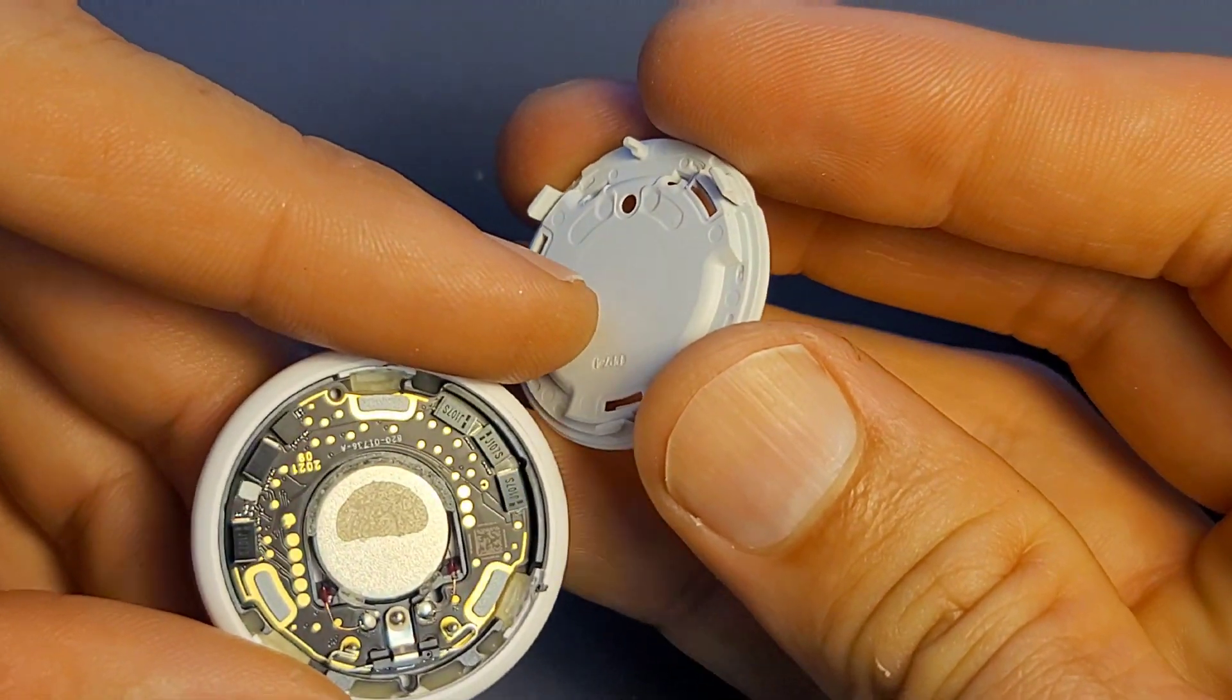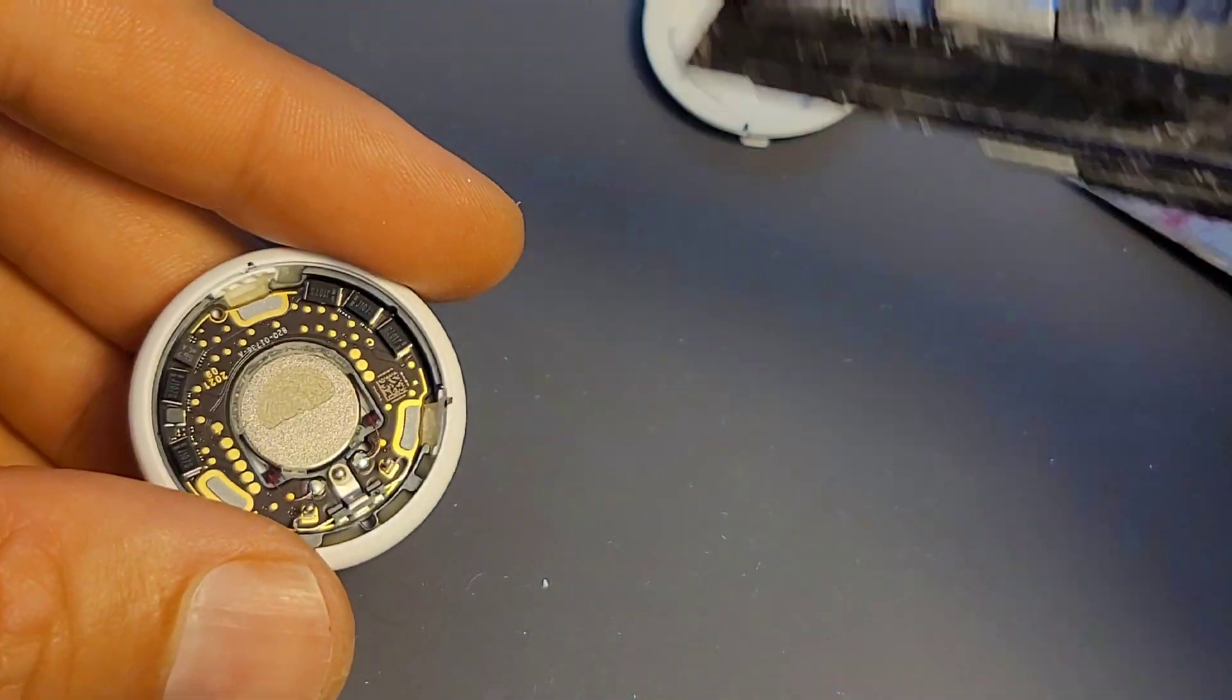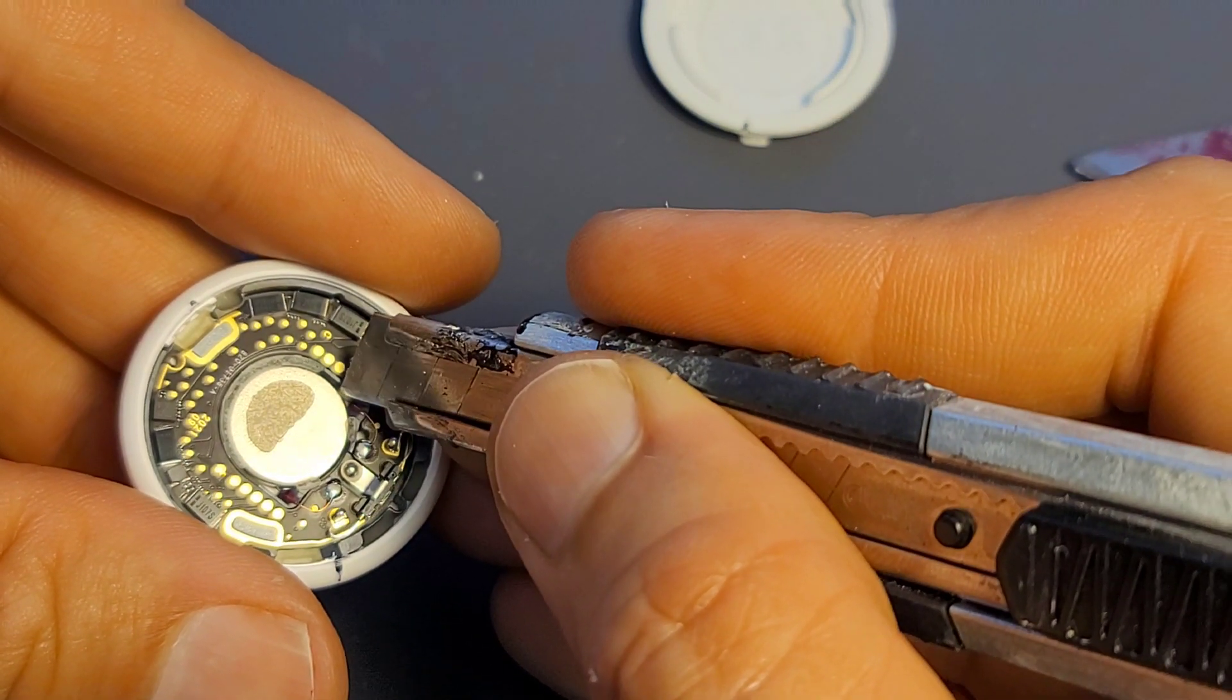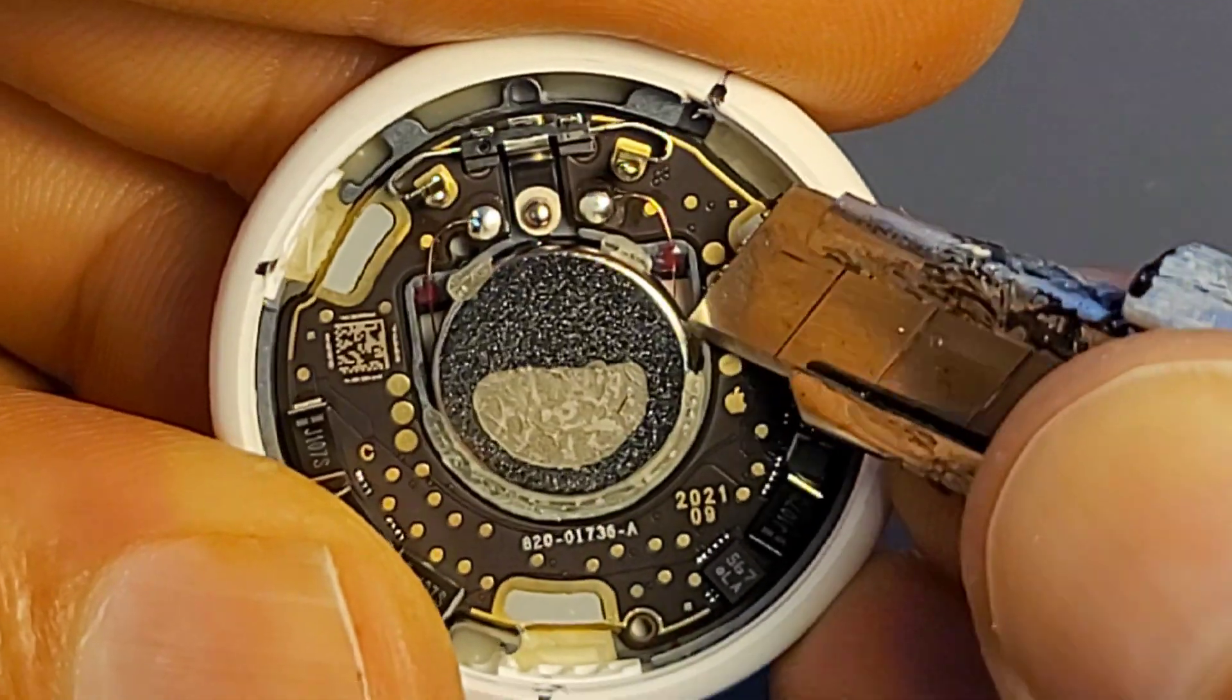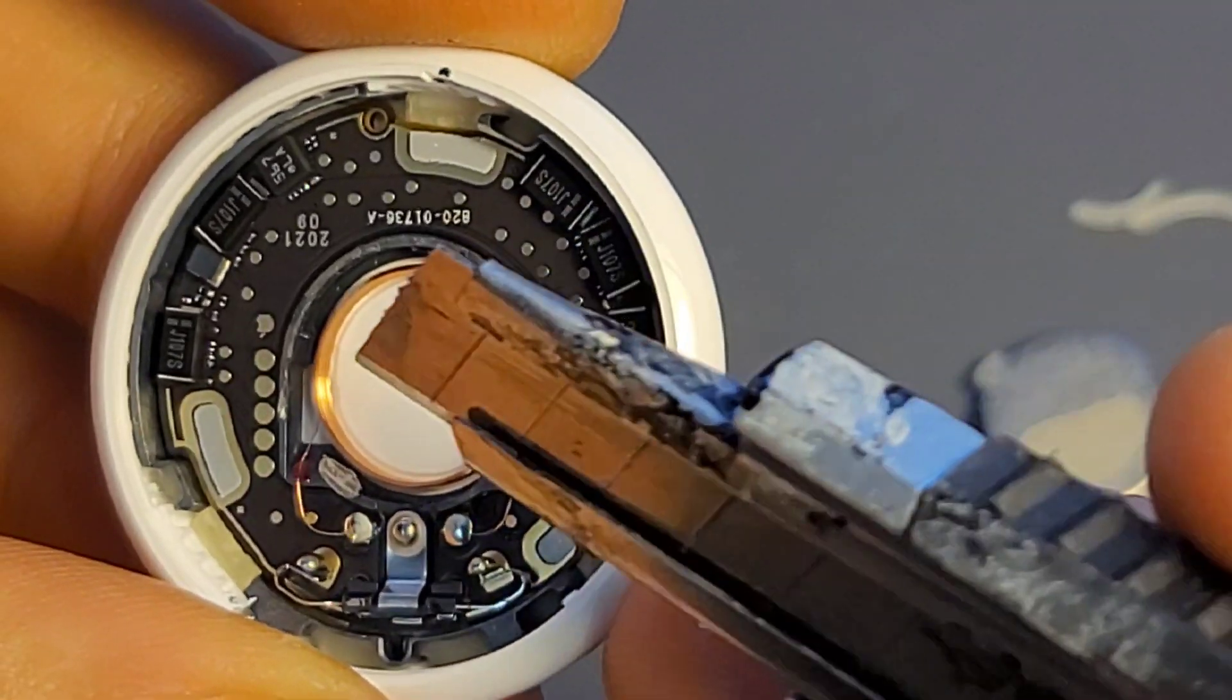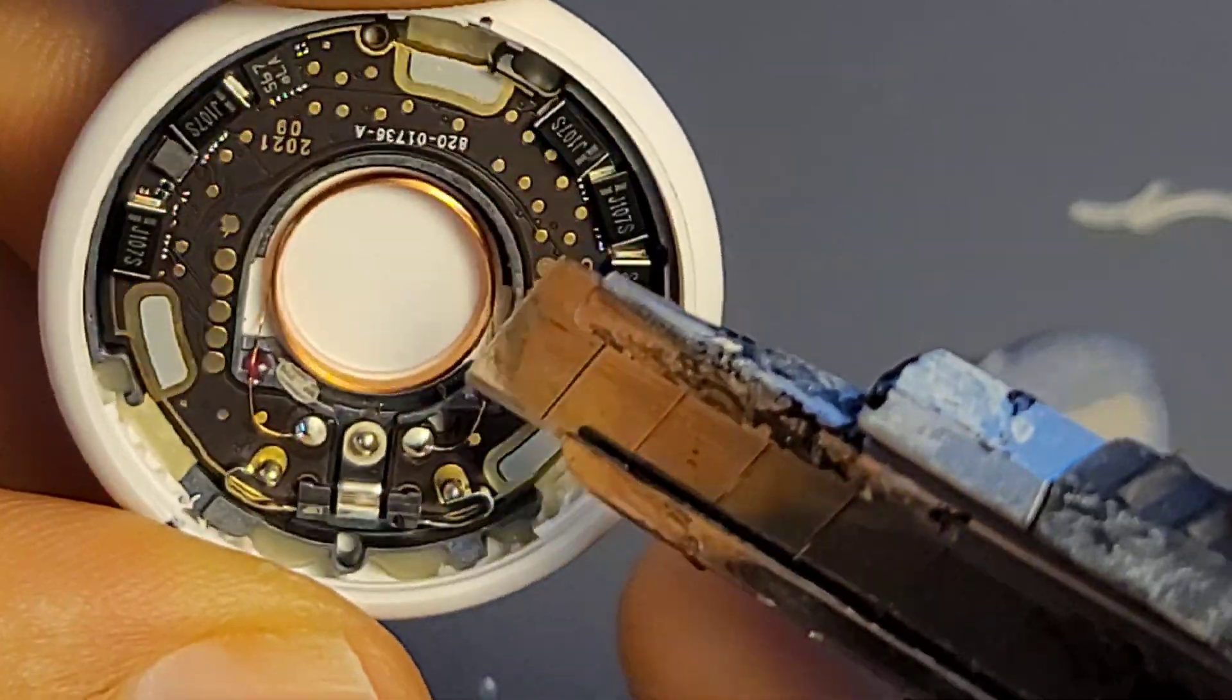Now sometimes the speaker will stay stuck to the plastic. In this case the speaker has stayed stuck in there. So we're gonna carefully remove this. This is the speaker coil, so the speaker coil is gonna remain in there.